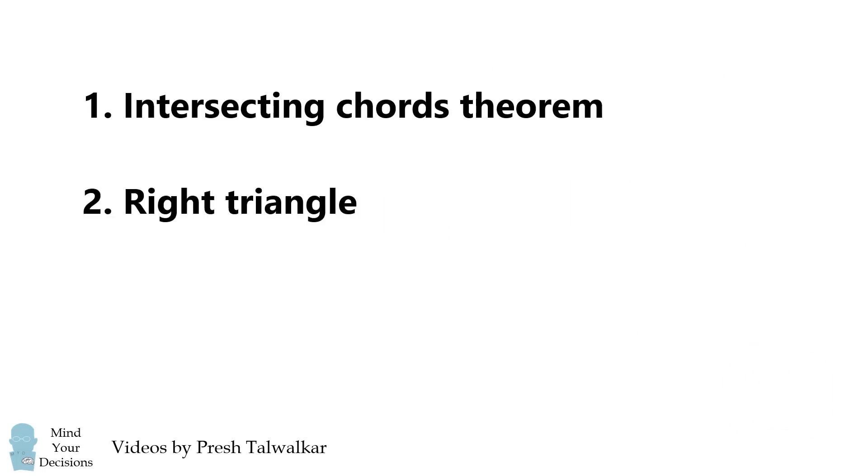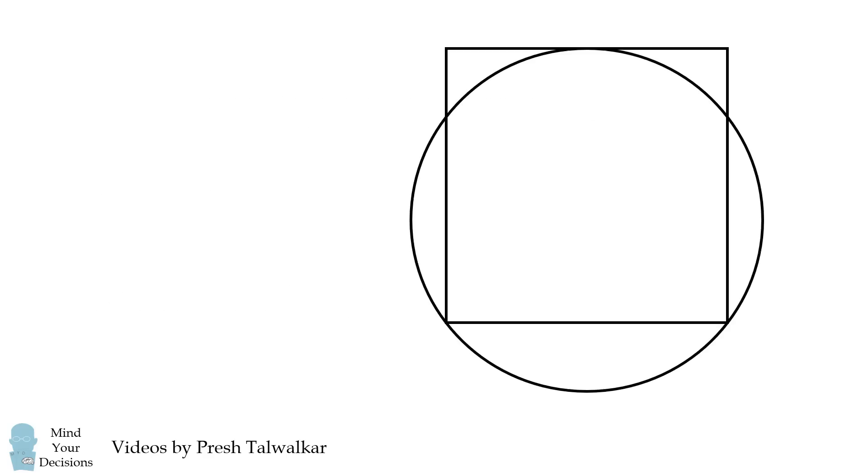I'm going to present three different ways to solve this problem. Let's get started with the intersecting chords theorem. To begin, we'll construct the perpendicular bisector of the top side of the square. Since point E, this top point is tangent to the circle, this perpendicular bisector is a diameter of the circle.